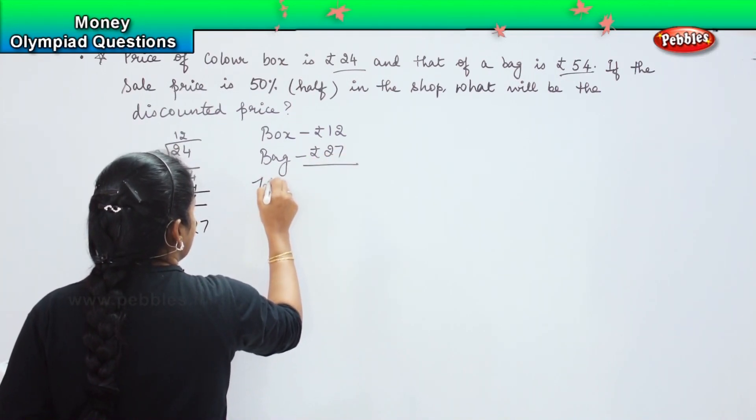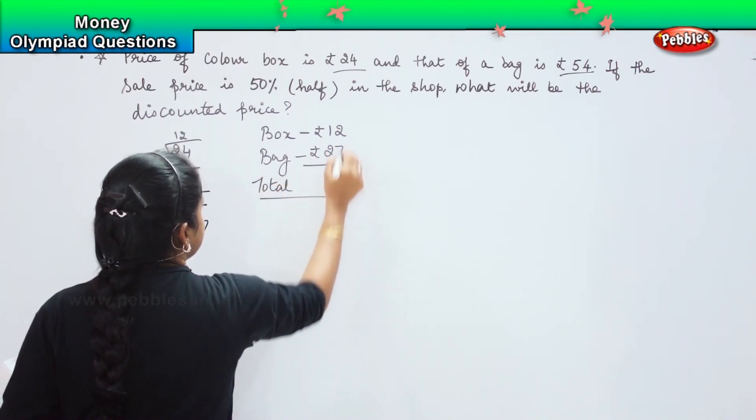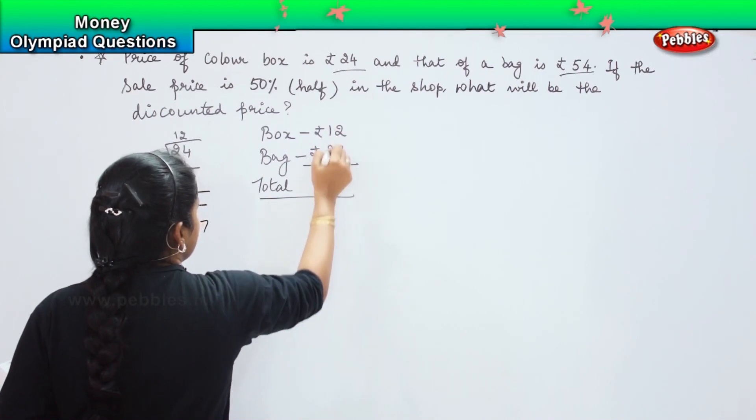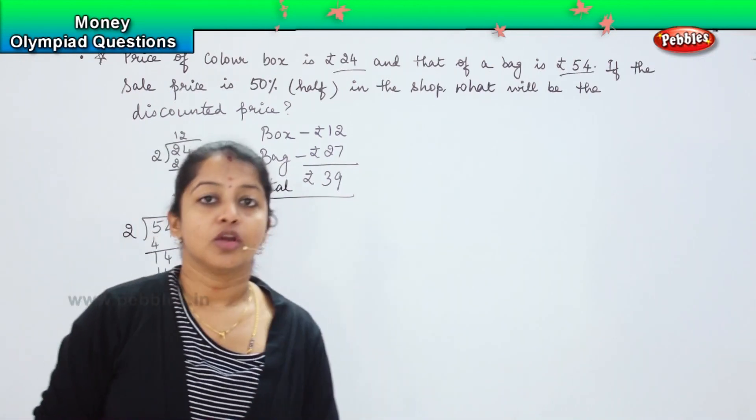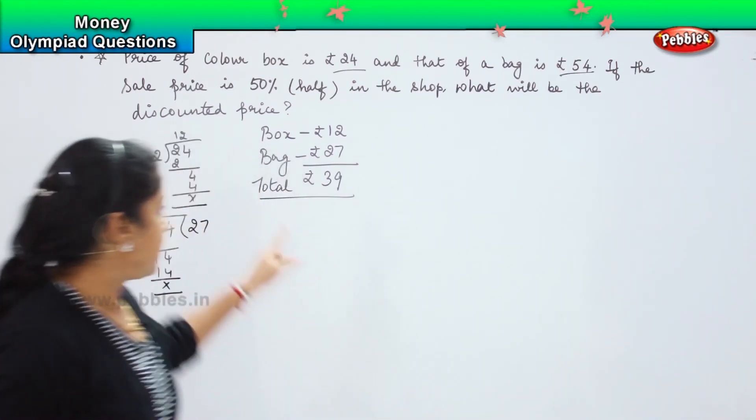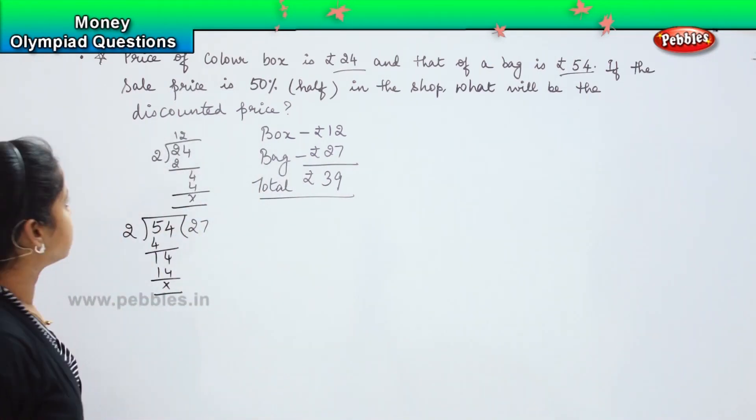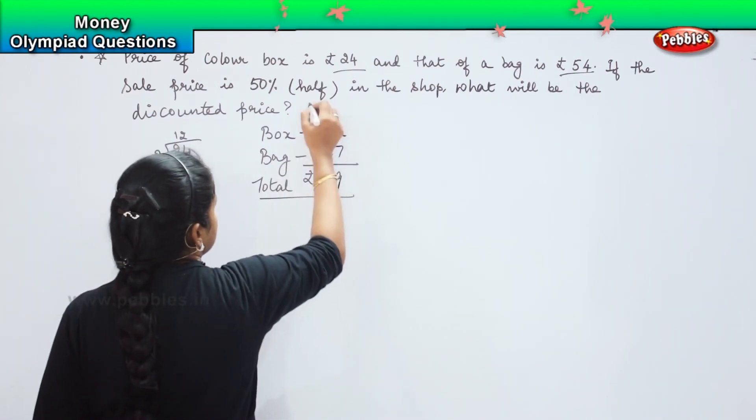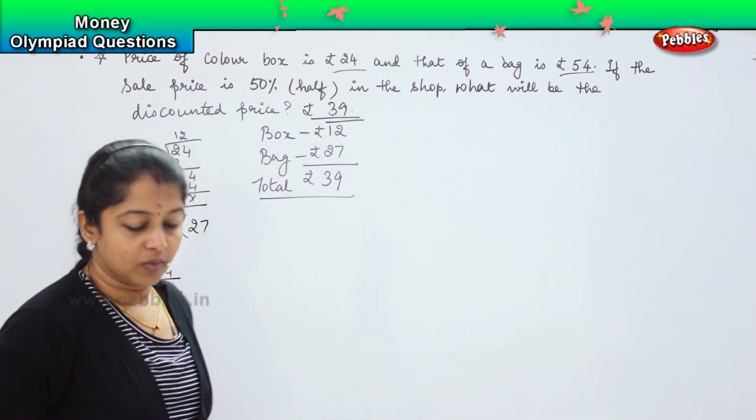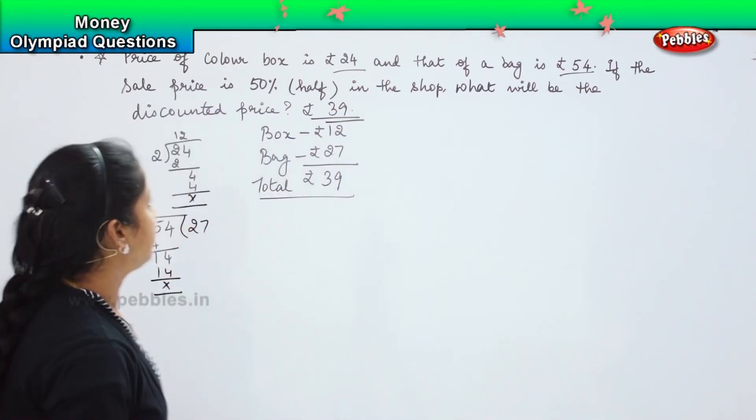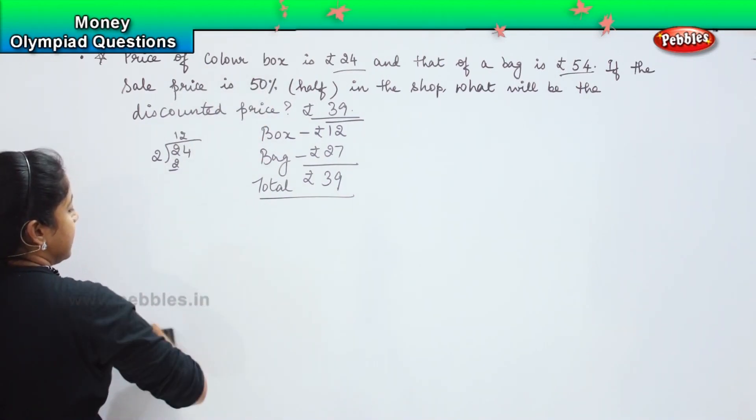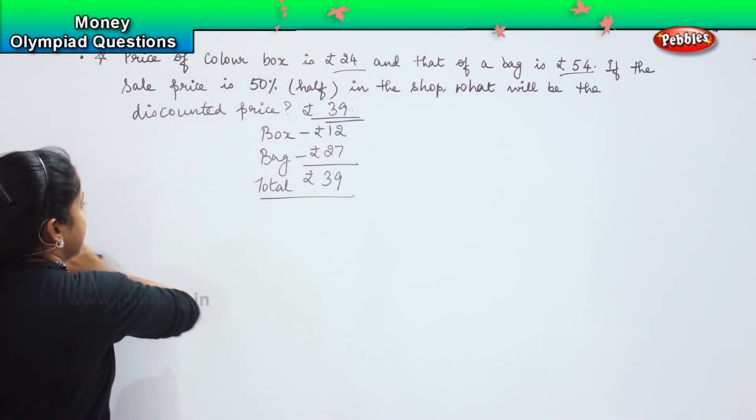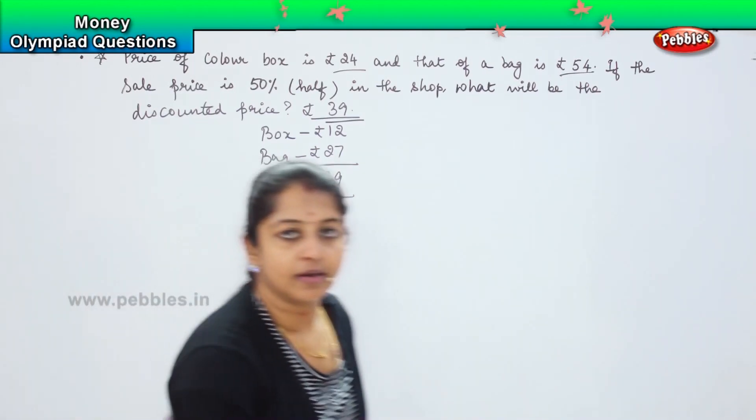If you add, the total will be 2 plus 7 is 9 and 1 plus 2 is 3. So now the total value should be rupees 39 that is 39 will be the price after discount. The answer will be rupees 39. Did you understand children? Whenever you get the value wherein it says 50 percent or half, it means that you have to divide that number by 2.